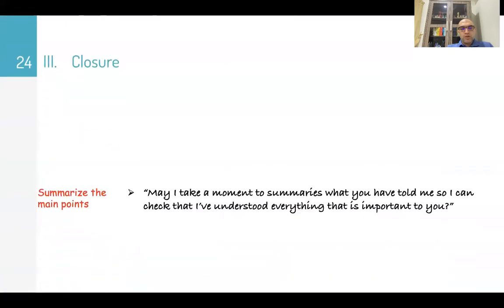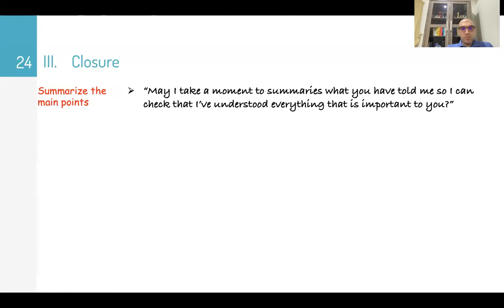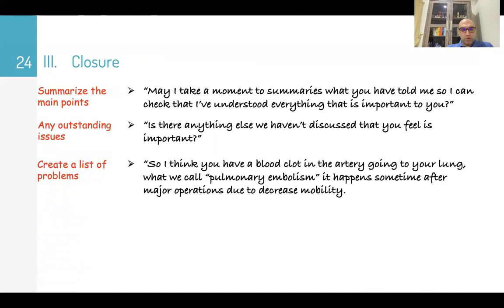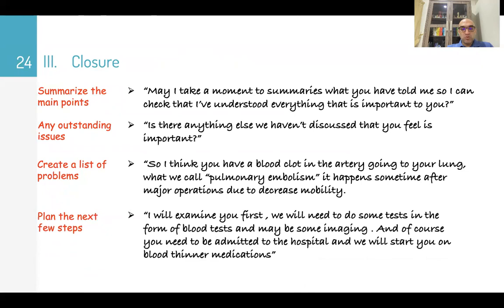Then the closure. Start with summarizing the main points. May I take a moment to summarize what you have told me so I can check that I have understood everything that is important to you? Any outstanding issues? Is there anything else we haven't discussed that you feel is important? Then create a list of problems. So I think you have a blood clot in your artery going to your lung. What we call pulmonary embolism, it happens sometimes after major operations due to decreased mobility. I will examine you first. We will need to do some tests in the form of blood tests and may do some imaging, what we call CT pulmonary angio. And of course, you need to be admitted to the hospital and we will start you on blood thinner medications.